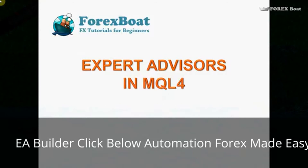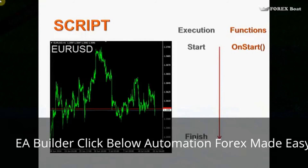Let's have a look. This is how a script works: we attach the script to a chart and then the script gets executed. It has a start of execution and a finish. For the script, as soon as you attach it to the chart, the OnStart function — within the body of which we've been writing all of our code — gets called. As soon as it is executed and that function finishes working, the script completes its life. Basically, the execution has been completed.